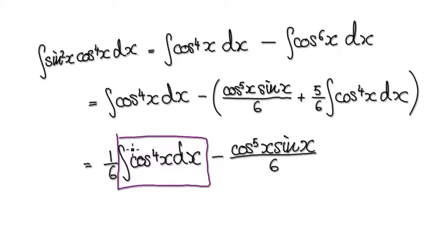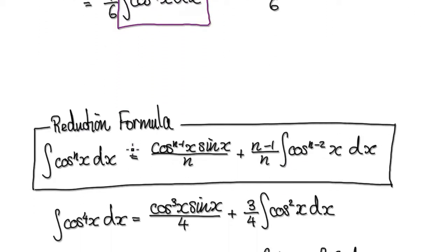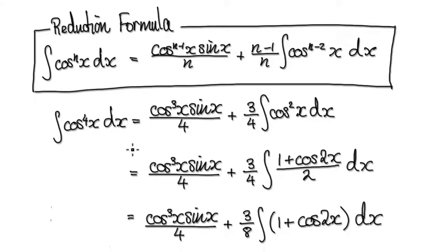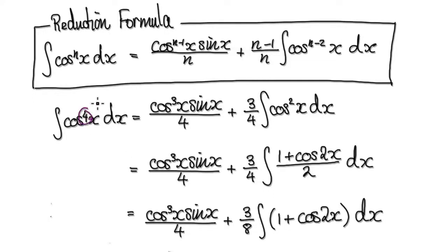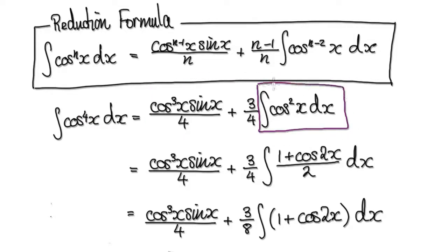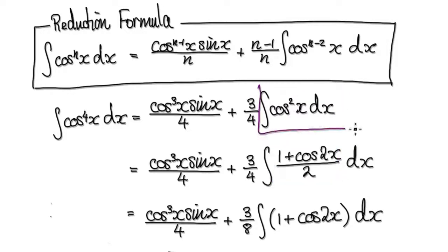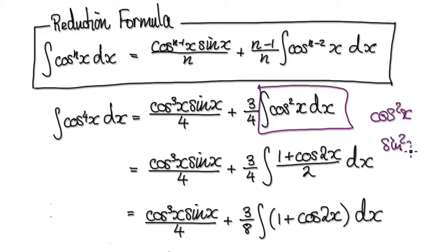So we need to work out cos to the power of 4. Using the reduction formula on cos⁴, that will give you this. Now by this point, you should be able to integrate this easily. To integrate this, replace it with this. I'm assuming you can easily integrate this — cos²x you should know how to integrate easily, and sin²x you should know how to integrate easily. So to do this, replace the cos²x with this.